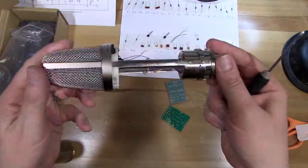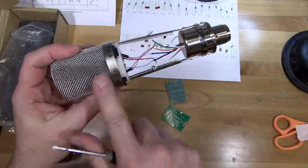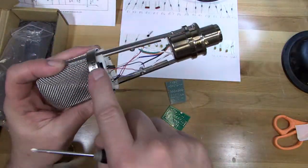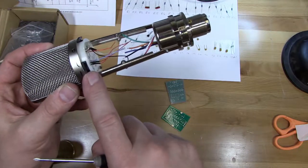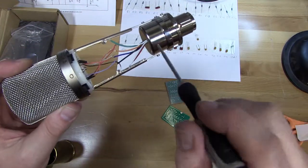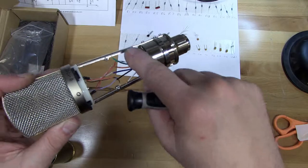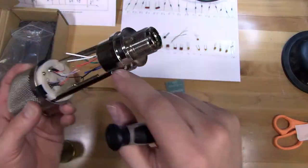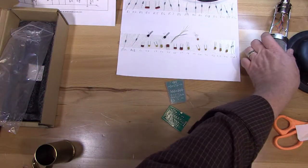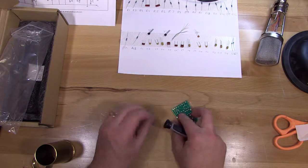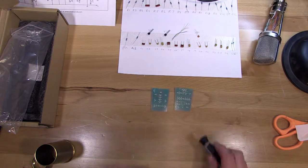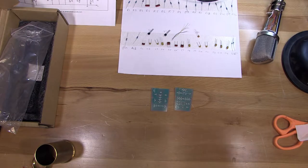So that's your mic housing with the capsule, switches for pad, and high pass filter. And also your transformer's inside of here. And you have wires here that go both to the transformer and to the XLR. So we'll get to those later. We've got our two printed circuit boards. And we'll start soldering.